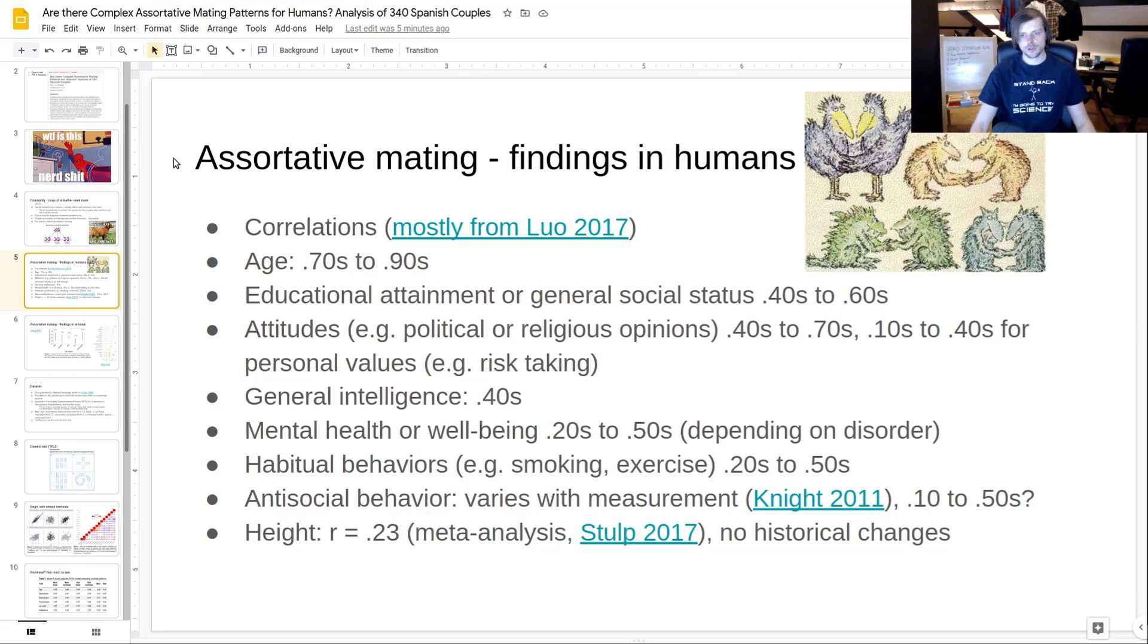Educational attainment has super strong assortative mating, general social status income stuff a bit less - 0.4 correlation is 0.4 to 0.6. That region. Attitudes, like religious or political opinions, are also quite high, especially religious stuff. If you do a composite measure of political opinion or religious stuff, they tend to be very strongly correlated, like 0.6, 0.7 even.